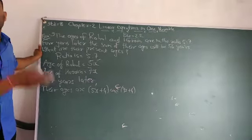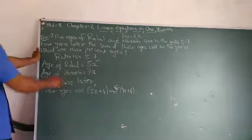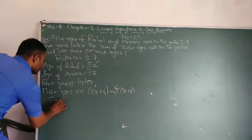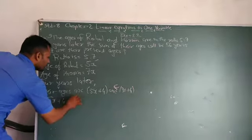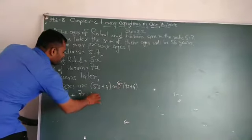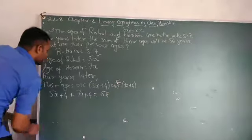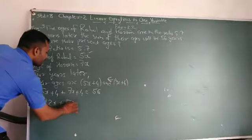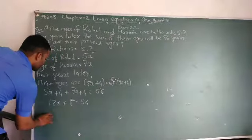Four years later, the sum of their ages will be 56. So, 5x plus 7x is 12x, and 4 plus 4 is 8, equals 56.